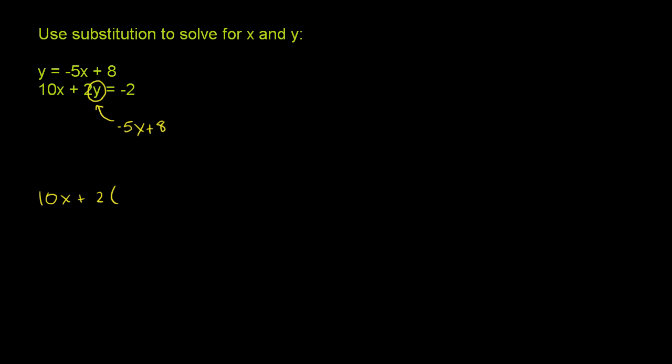So the second equation over here is 10x plus 2. And instead of writing a y there, and I've said it multiple times already, we can write a negative 5x plus 8. The first constraint tells us that's what y is. So negative 5x plus 8 is equal to negative 2.